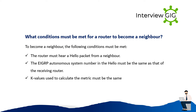What conditions must be met for a router to become a neighbor? To become a neighbor, the following conditions must be met: the router must hear a hello packet from a neighbor, the EIGRP autonomous system number in the hello must be the same as that of the receiving router, and the K-values used to calculate the metric must be the same.